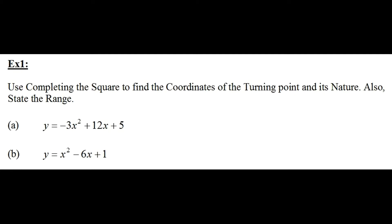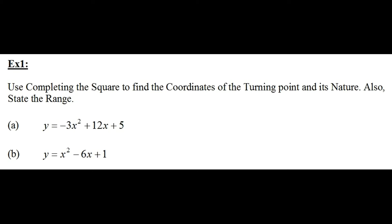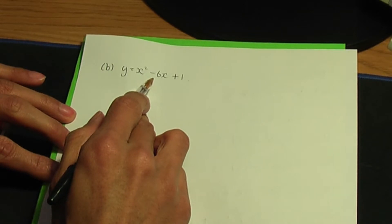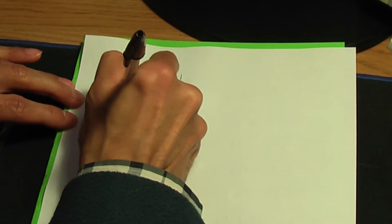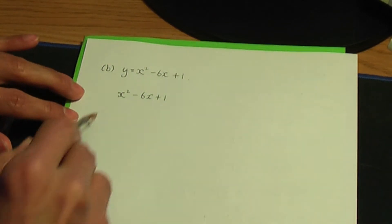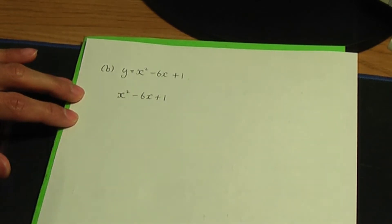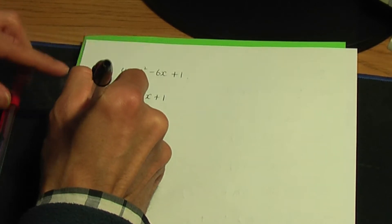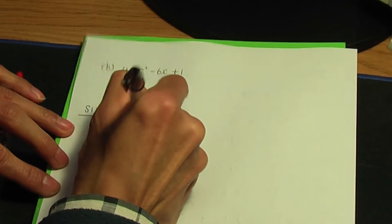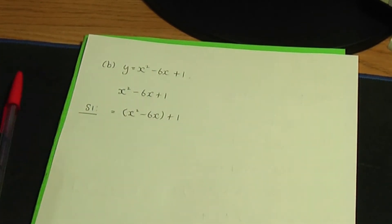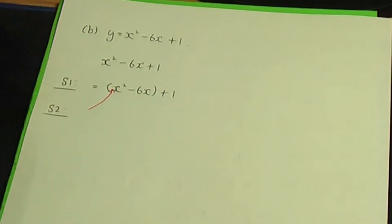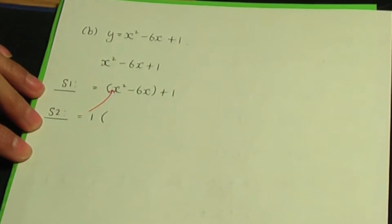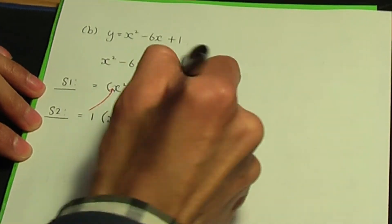Part b: y equals x squared minus 6x plus 1. Step one: write the x squared term and the x term in a bracket. Step two: the coefficient of x squared is plus 1, so we take out 1 as a common factor, leaving us with x squared minus 6x inside the bracket, plus the 1 at the end.